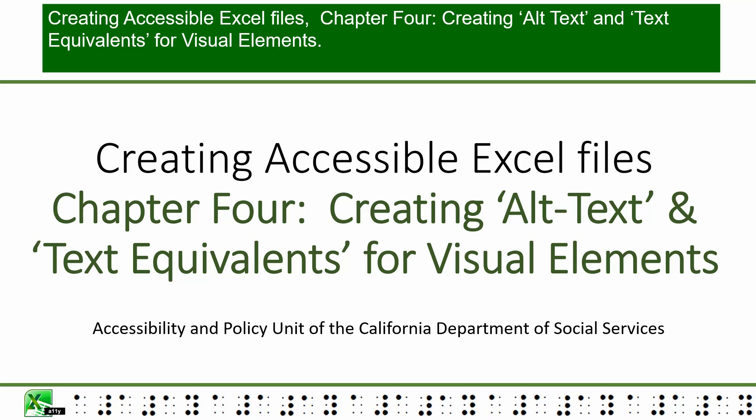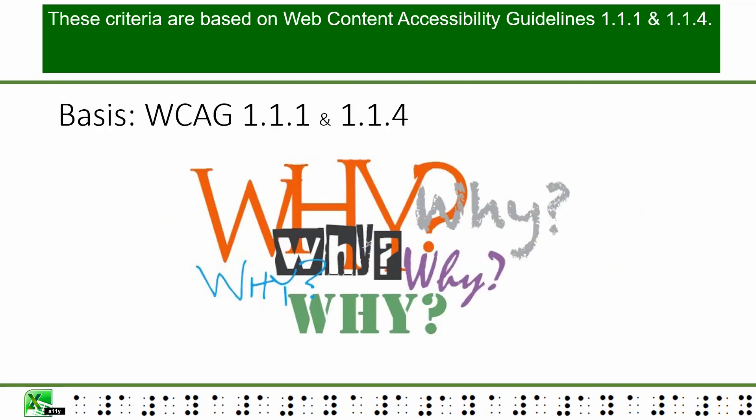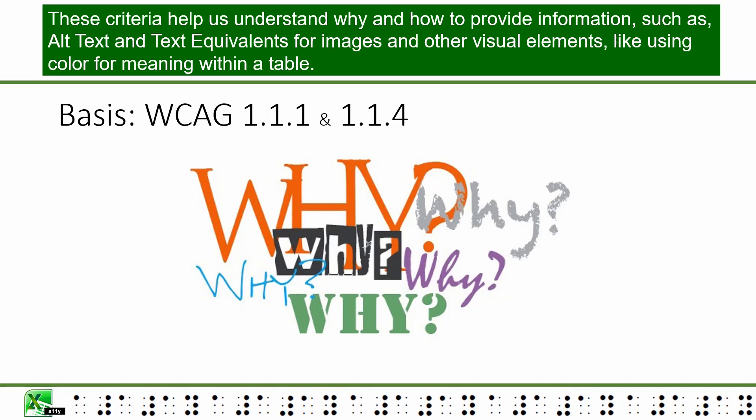Creating Accessible Excel Files, Chapter 4: Creating Alt Text and Text Equivalents for Visual Elements. This training video is produced by the Accessibility and Policy Unit of the California Department of Social Services. These criteria are based on Web Content Accessibility Guidelines 1.1.1 and 1.1.4, and help us understand why and how to provide information such as alt text and text equivalents for images and other visual elements like using color for meaning within a table.